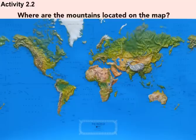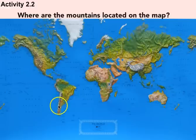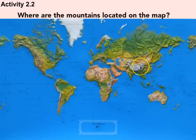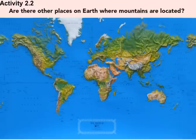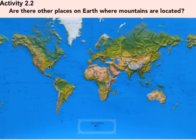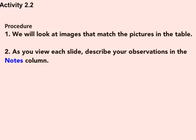Looking at this map, you can see where mountains are located — the Andes Mountains, the Alps and Urals, the Himalayas, and smaller chains like the Appalachian Mountains. But are there other places where mountains are found? Most of our map is ocean. Might we be able to find mountains at the bottom of the ocean? We'll take a look at that.